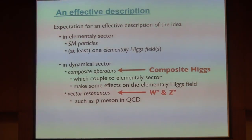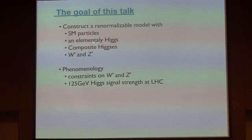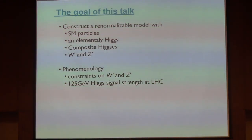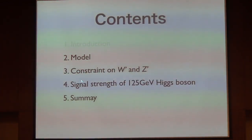So we assume there are W' and G'. The goal of this talk is to construct a renormalizable model with standard model particles, elementary Higgs and composite Higgs bosons, W' and G', and study the phenomenology of this system. Today I would like to focus on the constraints on W' and G', and on the 125 GeV Higgs signal strength at LHC. Through this phenomenological study, I want to indirectly check the idea of the partially composite model.